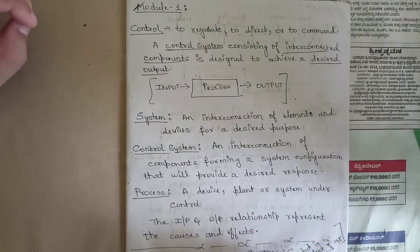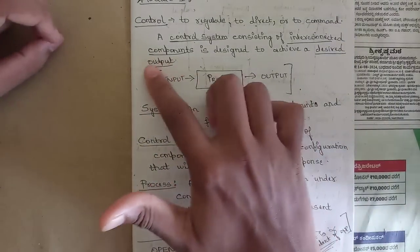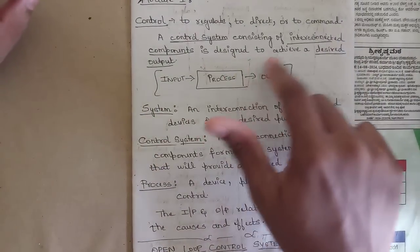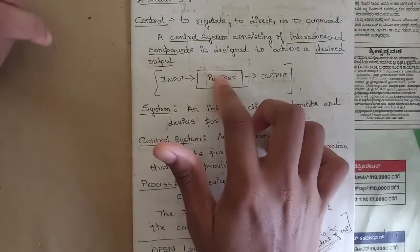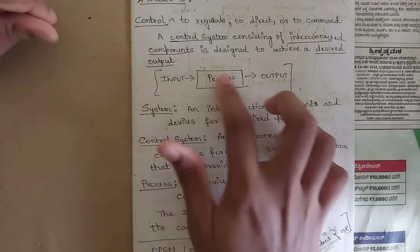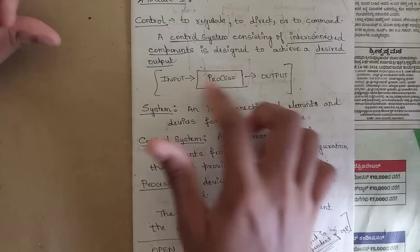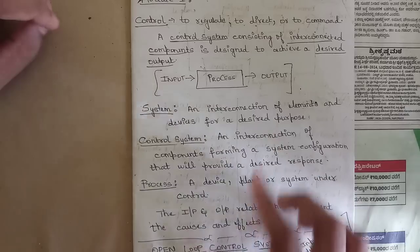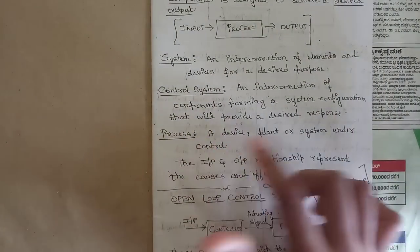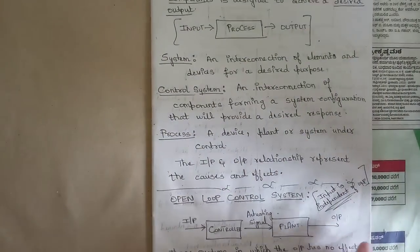Let's start with some basic concepts — the definition of a control system. A control system consists of interconnected components designed to achieve a desired output. An input is given to a process or circuit, and the desired output is generated. The definition is: an interconnection of components forming a system configuration that will provide the desired response.